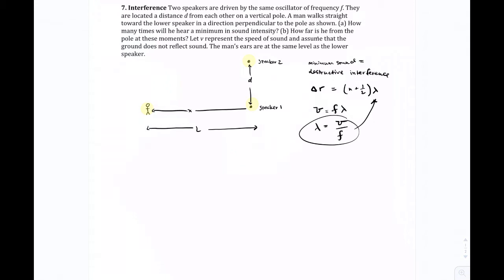but the thing about X is it's changing, so this person's walking towards speaker one, which means that X is a variable. X is going to start at L, and it's going to go all the way to, I don't know, maybe zero, but probably the last minimum's not at zero. Depends on if D is a certain integer number of wavelengths away, half integer.